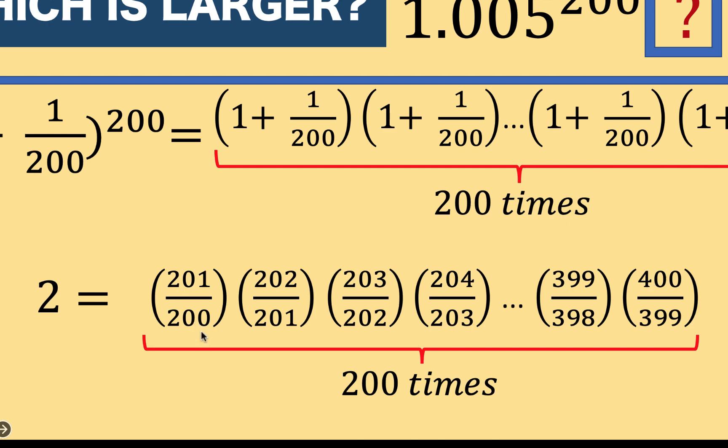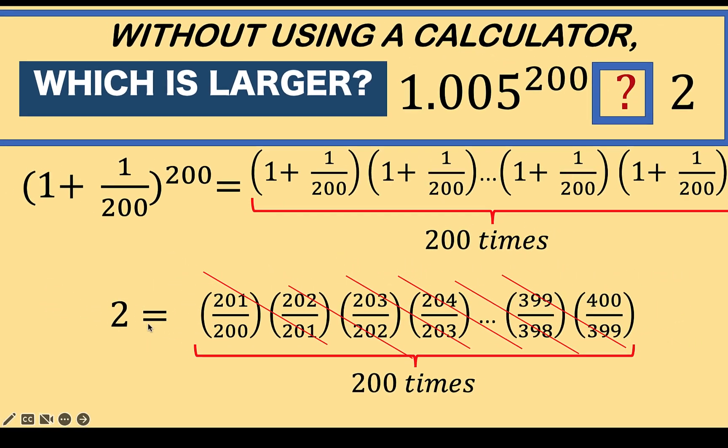Notice also that in the denominator, there is always 1 less than the numerator. Also notice that the numerator 201 and this denominator 201 can be cancelled out, and so all the other corresponding numerators and denominators at the middle. What's left at the numerator is this 400, and what's left in the denominator is this 200. And clearly, 400 divided by 200 is equal to 2.